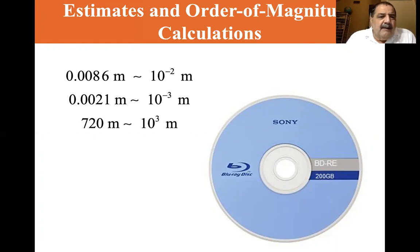So if we look at 0.0086, that's closer to 0.01 than it is to 0.001. So it would be on the order of 10 to the minus two meters. 0.0086 meters is on the order of 10 to the minus two meters. 0.0021 is more on the order of 10 to the minus three meters. In other words, 0.002 is closer to 0.001 than it is to 0.010. So it would be on the order of 10 to the minus three meters.